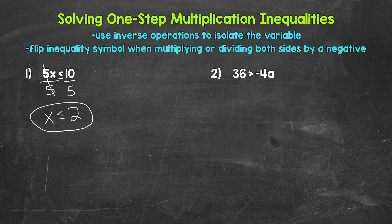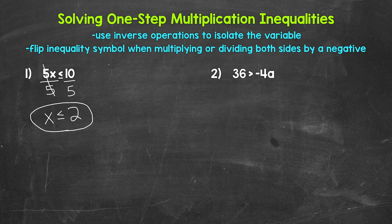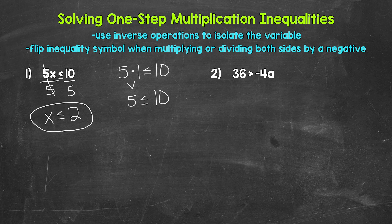X is less than or equal to two. So any value less than or equal to two is a solution of this inequality — it makes it true. Let's check a solution. We can't check every value, so let's use one. One is less than or equal to two, so plug in one for x: five times one is less than or equal to 10. Five times one gives us five, and five is less than or equal to 10. So we are correct. Our answer: x is less than or equal to two.